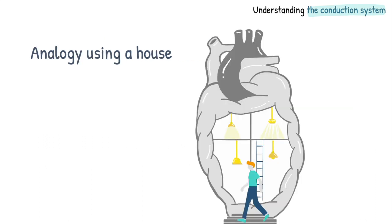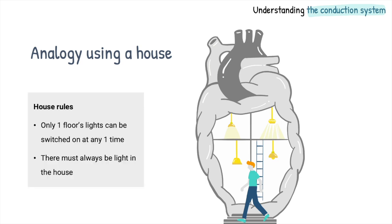Imagine a house owned by Alfred, which comprises two floors. Alfred has a set of house rules, which he abides by whenever he is at home. The first rule is that only one floor's lights can be switched on at any one time. The second rule is that there must always be light in the house.